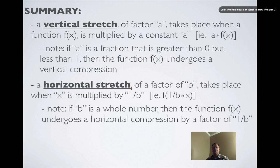A horizontal stretch of factor B takes place when x is multiplied by 1 over B inside the brackets. So if the multiplier was ½, the graph is stretched horizontally by a factor of 2; if it was 1/3, by a factor of 3; 1/5 by a factor of 5, and so on. Note: if B happens to be a whole number in front of x, then the function undergoes a horizontal compression by a factor of 1 over B — so if it's 4, it would be 1/4 as wide.